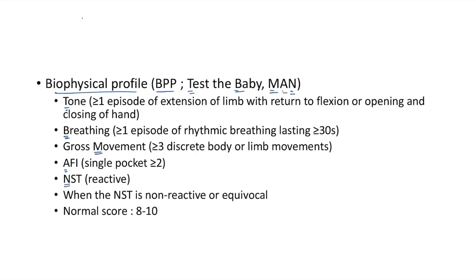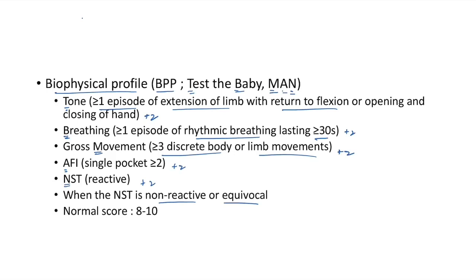BPP scoring: Tone — ≥1 episode of extension with return to flexion or opening/closing of hand (+2). Breathing — ≥1 episode of rhythmic breathing lasting ≥30 seconds (+2). Gross movement — ≥3 discrete body or limb movements (+2). Amniotic fluid — single vertical pocket ≥2 cm (+2). Reactive NST (+2). BPP is indicated when NST is non-reactive or equivocal. Normal score is 8 to 10.